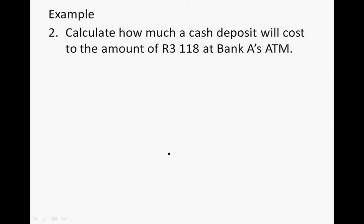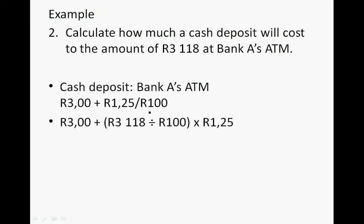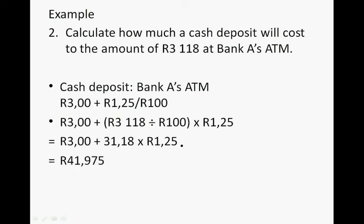Question 2: Calculate how much a cash deposit will cost for R3,118 at the bank's ATM. The cost is R3.00 plus R1.25 for every R100. So R3,118 divided by 100 gives 31.18, multiplied by R1.25 — the total also comes to R41.98.